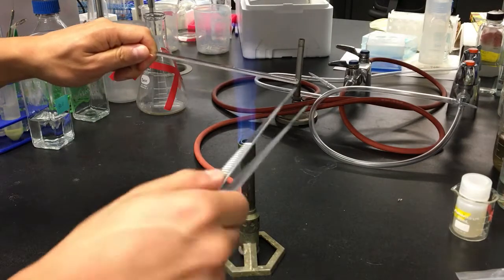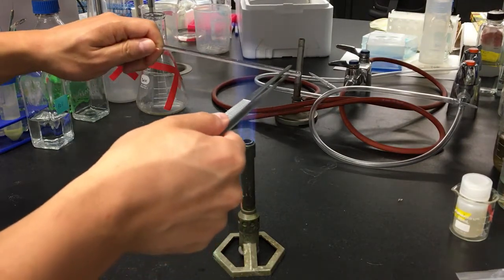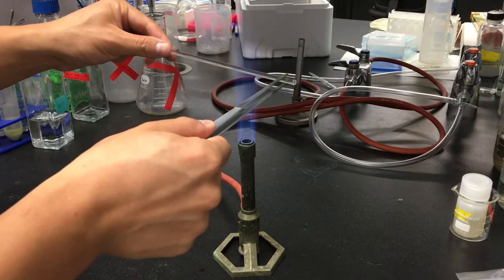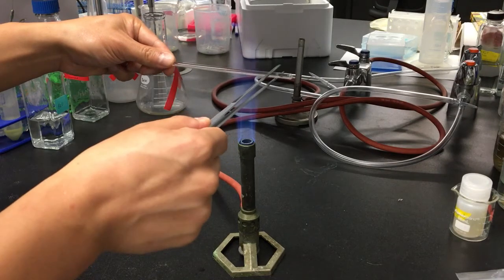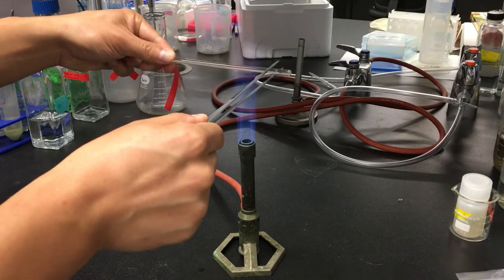First you'll need to soften part of the glass by heating it so that you can bend it. You will need a pretty strong flame to do this. Hold the rod furthest from the part you're heating.